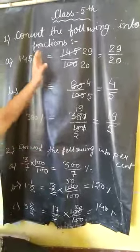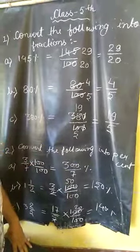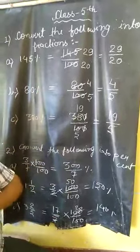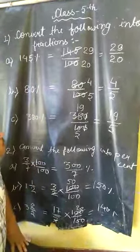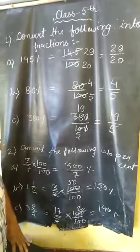Our first question: convert the following into fractions. First question, 145%. We can write it as 145 upon 100.